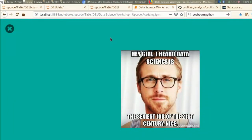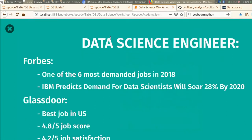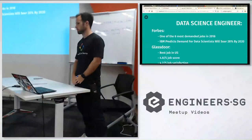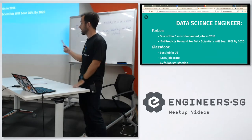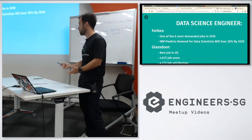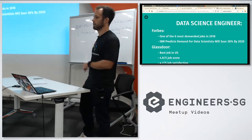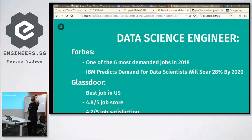Data science is actually one of the sexiest jobs of the 21st century — another reason to learn it because it's really well paid and there's a lot of demand. According to Forbes, it's one of the most demanded jobs in 2018. IBM predicts demand will rise by 28% by 2020. And according to Glassdoor, it's the best job in the US — a 4.8 out of 5 rating, 4.2 out of 5 job satisfaction, a great median salary, and a lot of job openings.